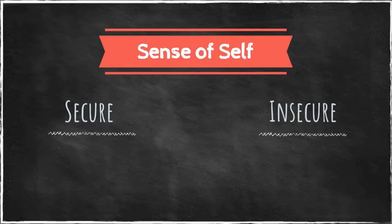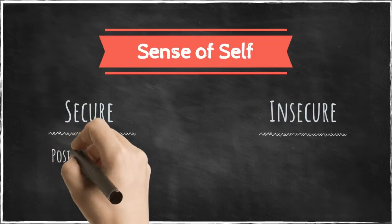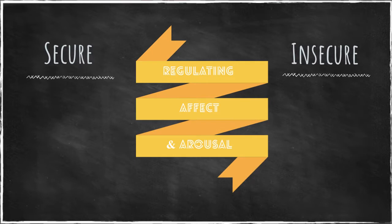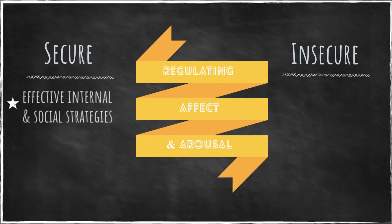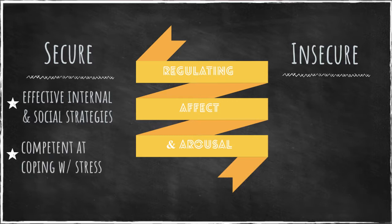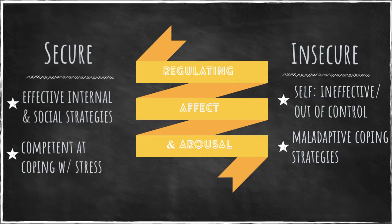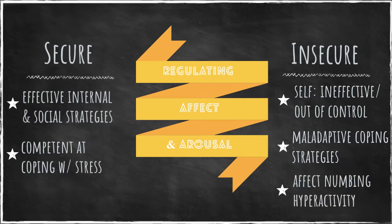Secure attachment is likely to develop a positive sense of self, whereas children with an insecure attachment are more likely to develop disturbances in the view of self and in the capacity to maintain self-esteem. Infants who have been effectively helped with regulation of arousal through soothing and contingent responding of their caregivers develop effective internal and social strategies for regulating affect and arousal, and become more competent at coping with stress. Infants who have experienced high levels of arousal and intense affect without the help of maternal regulation are likely to internalize a view of the self as ineffective or out of control, and to develop maladaptive coping strategies such as affect numbing or hyperactivity.